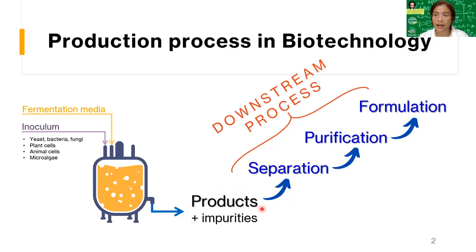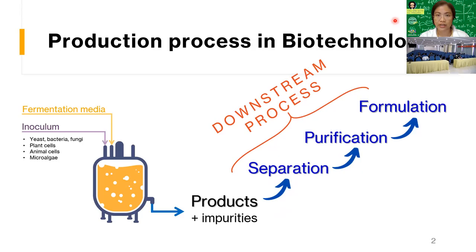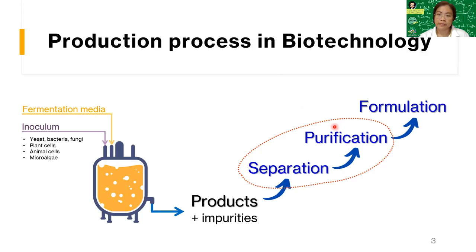Downstream processing is what you do after you get the product out from your production stage. Basically, it involves three stages. First, you have to separate the product from the impurity. Then you have to purify your product. After purification, you prepare the final form of the product — whether it's going to be liquid, powder, or crystal — depending on the type of product you are processing. Sometimes separation and purification go together: you separate something and also purify it a little bit, then do more purification to get a purer product.